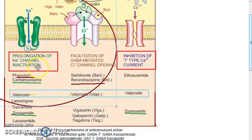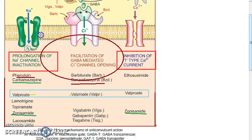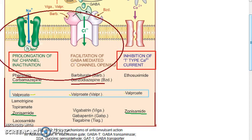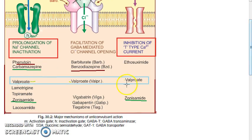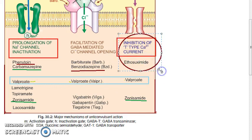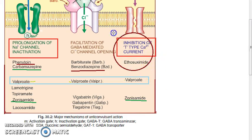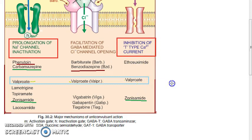Remember, phenytoin plus benzodiazepines are given in status epilepticus. Barbiturates always go hand in hand with benzodiazepines, so they also do GABA facilitation. Ethosuximide goes with the calcium current — based on mechanism of action, ethosuximide falls under inhibition of the T-type calcium current.